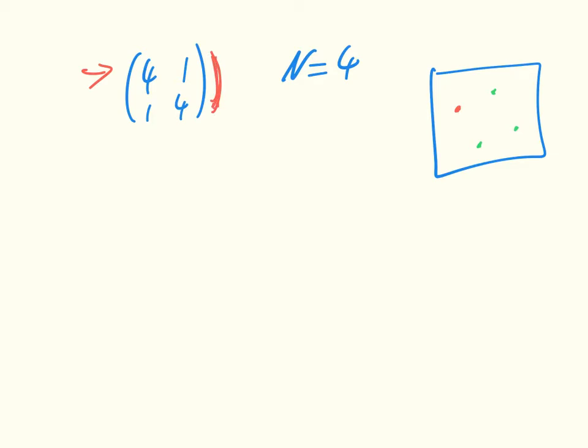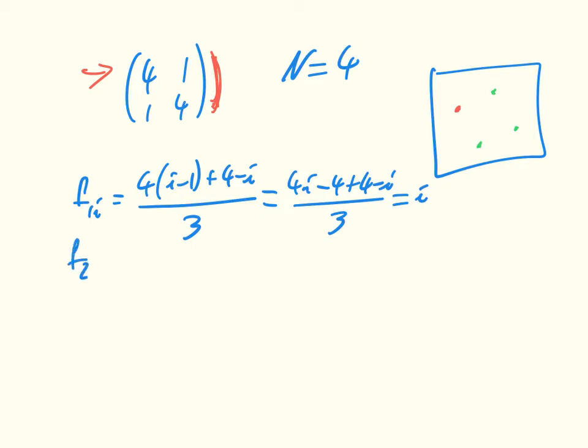We have that f1i is equal to 4 times i minus 1 plus 4 minus i, divided by 3. If I expand that out, I get 4i minus 4 plus 4 minus i divided by 3, which is just equal to i.